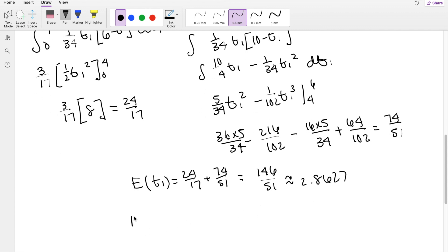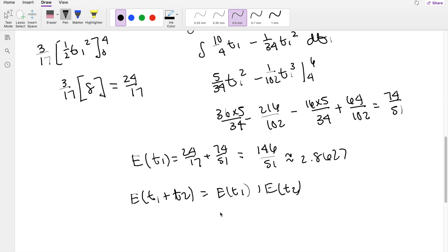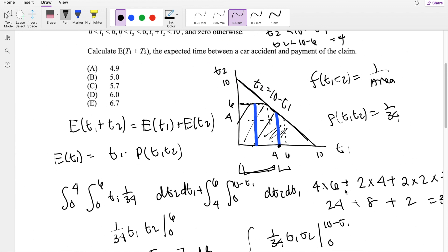But we know that we're asked to find the expected value of t1 plus the expected value of t2, which is equal to the expected value of t1 plus the expected value of t2, where t1 is equal to 2.867, and by symmetry, E(t2) is also 2.862, so this is equal to 5.725, which is our answer C.